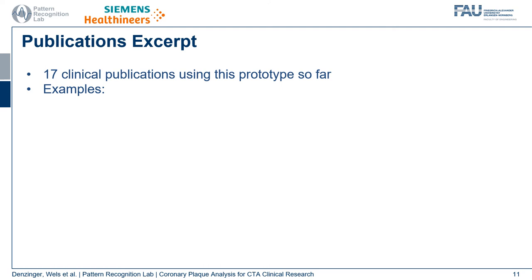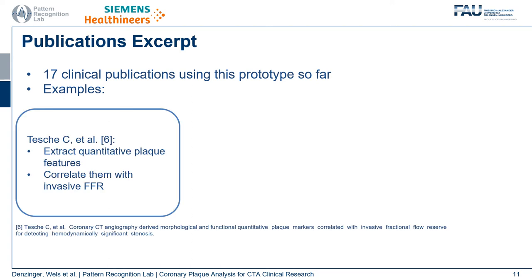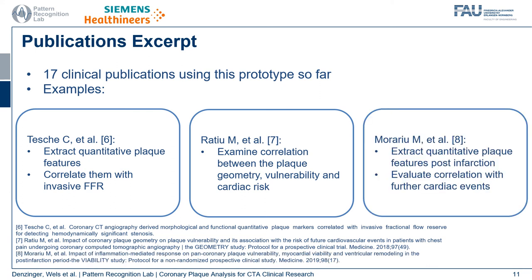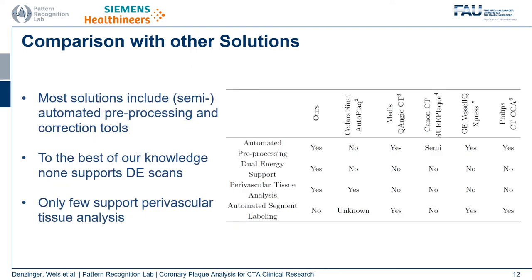Since this is a software publication, it has also been used in clinical publications. As far as we are aware, 17 clinical publications using this prototype exist so far. Examples include Teshe and others, who extract quantitative plaque features and correlate them with invasive FFR — the gold standard to determine whether a vessel should be revascularized. Ratio and others examine the correlation between the geometry of a plaque and its vulnerability, meaning how prone a plaque is to rupture. Moragio and others extract quantitative plaque features for patients who suffered a myocardial infarction and identify which plaque features correlate with future cardiac events.